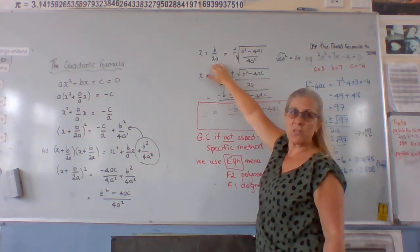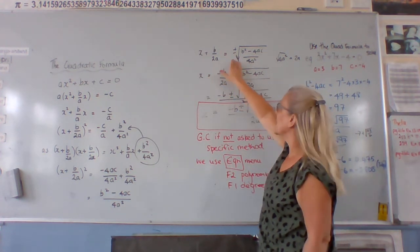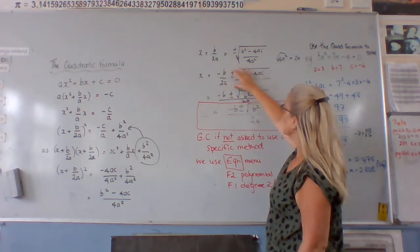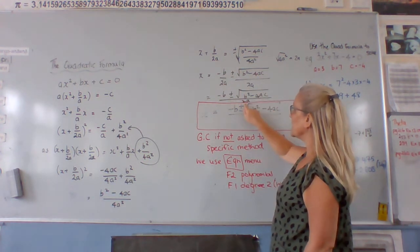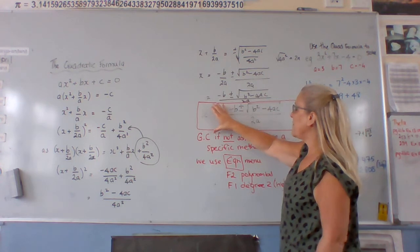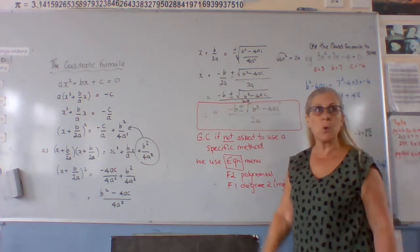Now I've brought this plus b over 2a onto the other side. I've got minus b over 2a, so I've got this thing. They're both over 2a, so I can write them all over 2a. And that gives us this thing here, which is called the quadratic formula.